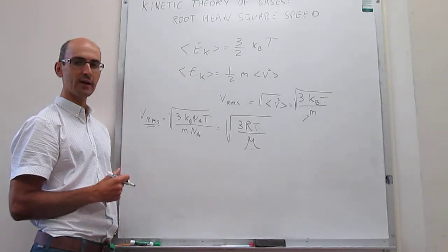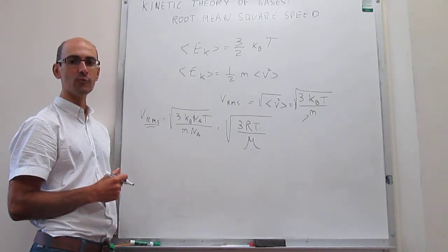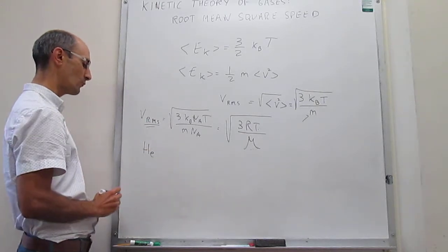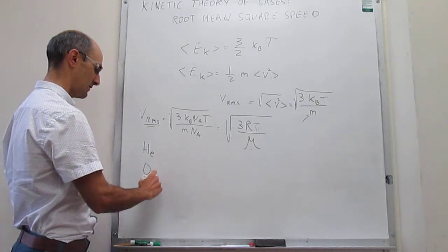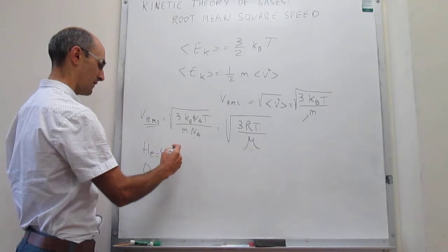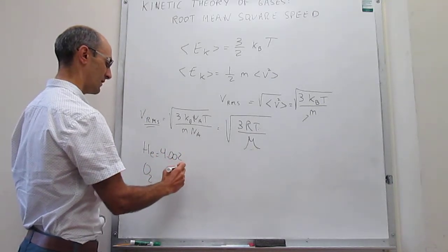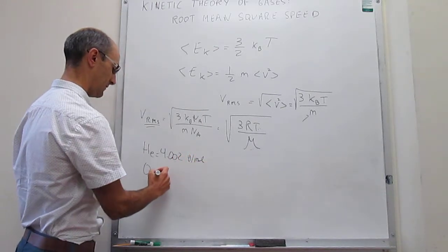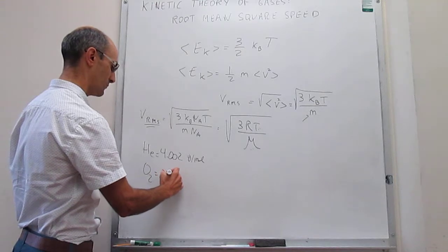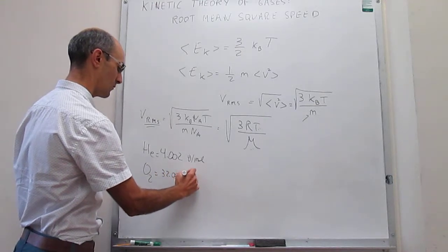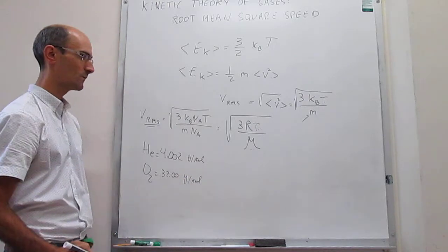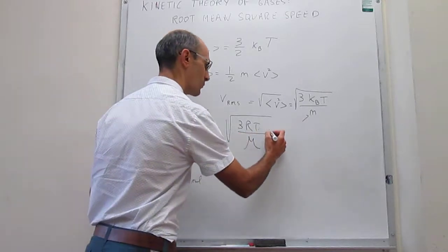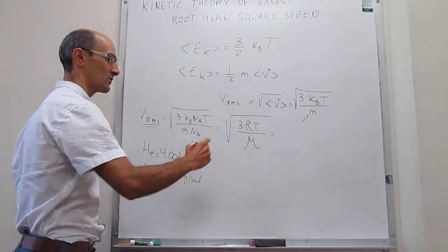To close up this video, we're actually going to be calculating the root mean square speed for two gases. It's going to be helium, and then we're going to do this also for oxygen. The masses with four significant figures are going to be 4.002 grams per mole, and then this is going to be 32.00 grams per mole. So let's actually try to calculate one of them and then we'll talk about the other one.